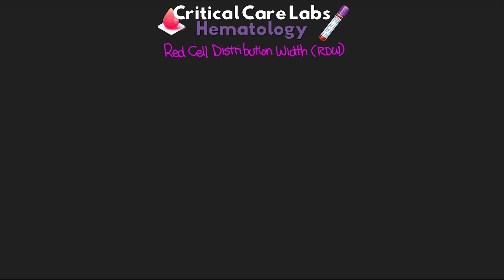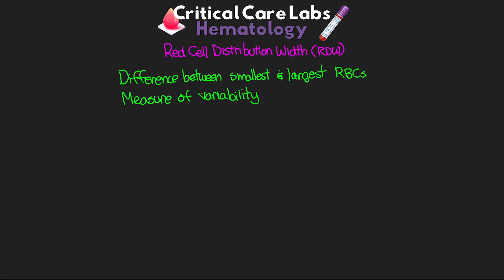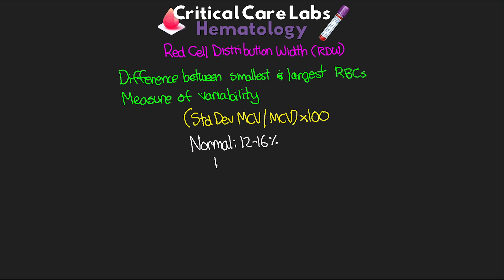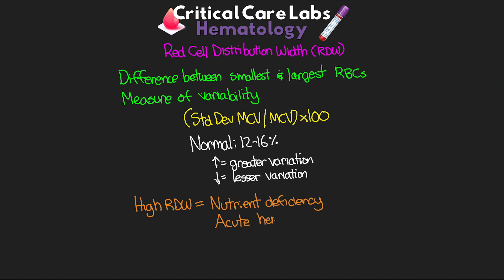Next we're going to talk about the red cell distribution width, or RDW. This is a measure of the difference between the smallest and largest RBCs — essentially a measure of variability. Along with MCV, this is primarily used to determine the type of anemia. We get this by taking the standard deviation of our MCV, dividing it by the MCV, and multiplying by 100. Normal is 12 to 16%, with higher values indicating greater variation in size. A high RDW may indicate a nutrient deficiency or some sort of acute hemorrhage.